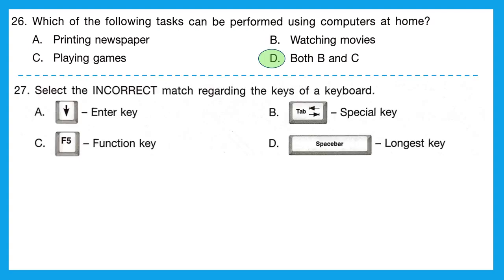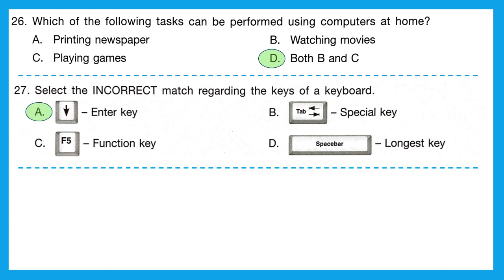Question 27: select the incorrect match regarding the keys of our keyboard. Option A — is it an enter key? No, it is not. Option B — tab key, is it a special key? Yes. Option C — function key, yes. Option D — space bar, is it the longest key? Yes. So the incorrect match is option A; it's not a symbol of the enter key.